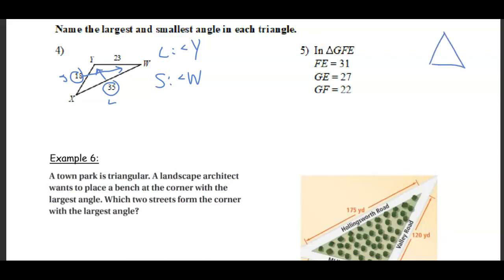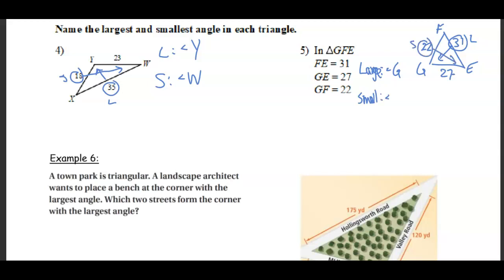Drawing a picture is sometimes very helpful. For triangle GFE: FE is 31, GE is 27, and GF is 22. We want the largest angle, so we find the largest side, which is 31. Going across, angle G is the largest. The smallest side is 22, and going opposite that gives angle E as the smallest.